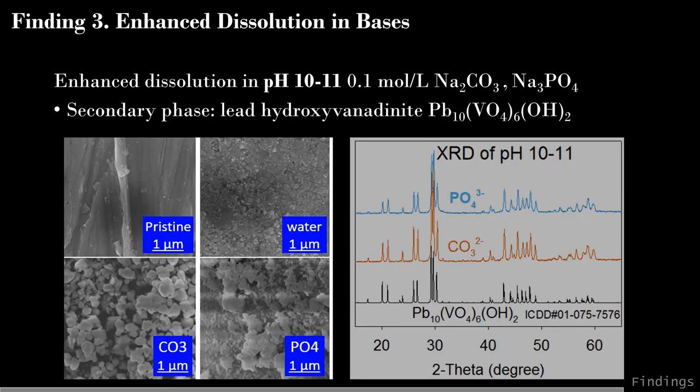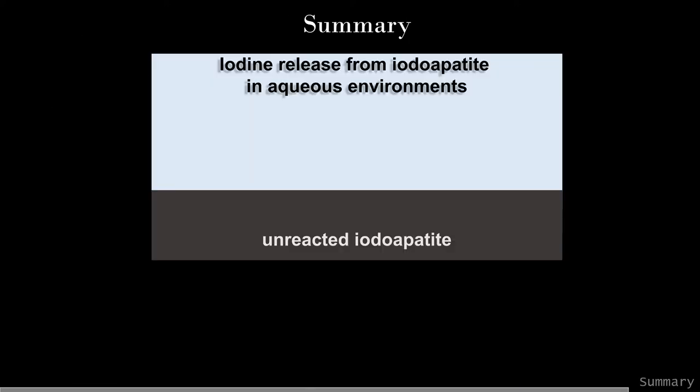SEM shows that samples leached in sodium carbonate and sodium phosphate have similar morphology—large grain sizes with an aggregated appearance. XRD confirmed that in both sodium carbonate and sodium phosphate solutions, the leached surface is covered by a new phase: a hydroxylvanadite structure.